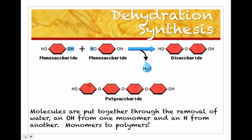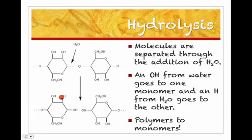You can keep doing this. Notice that when you have two monomers together, you have a disaccharide. But if you have more than two, we call it a polysaccharide. This is specific to carbohydrates. We're going to be getting more into this as we go through this slideshow.